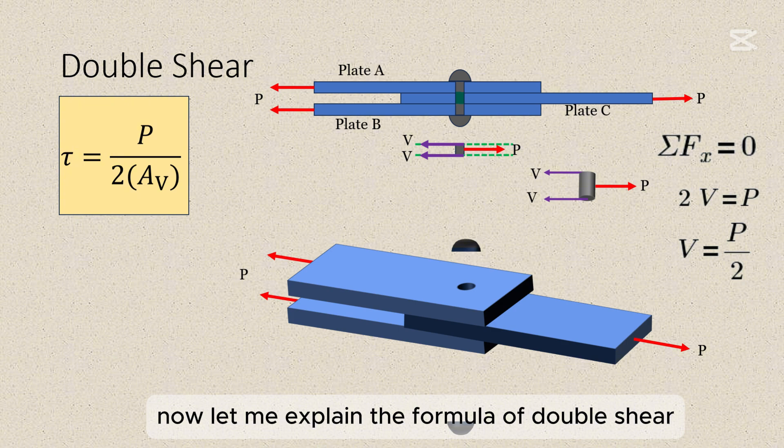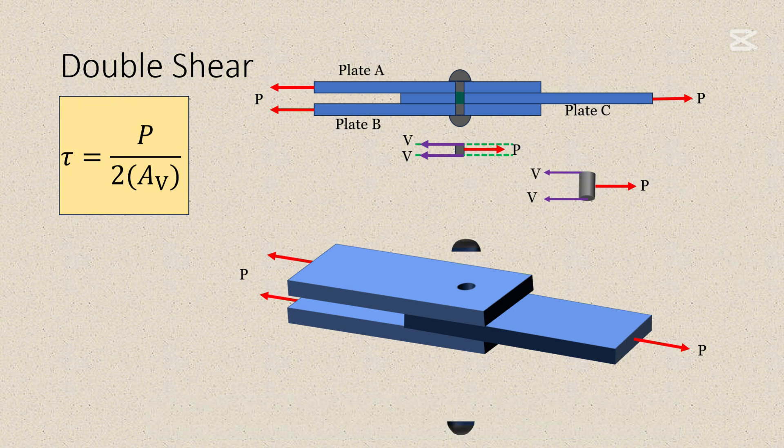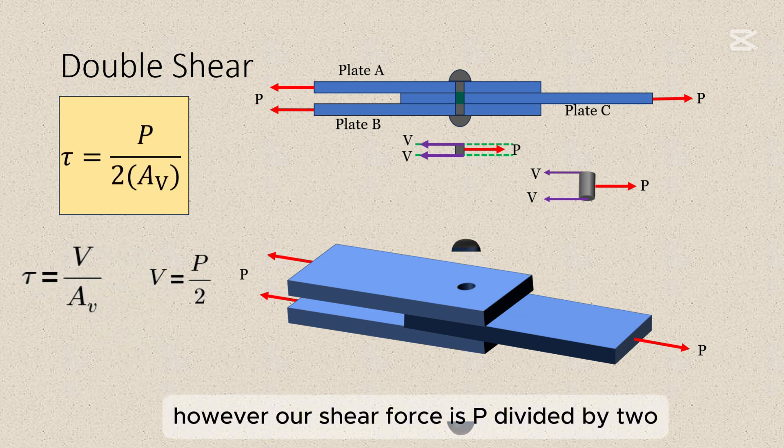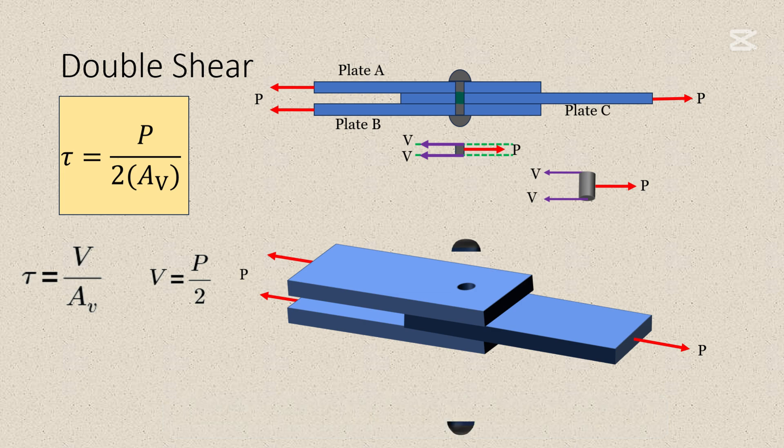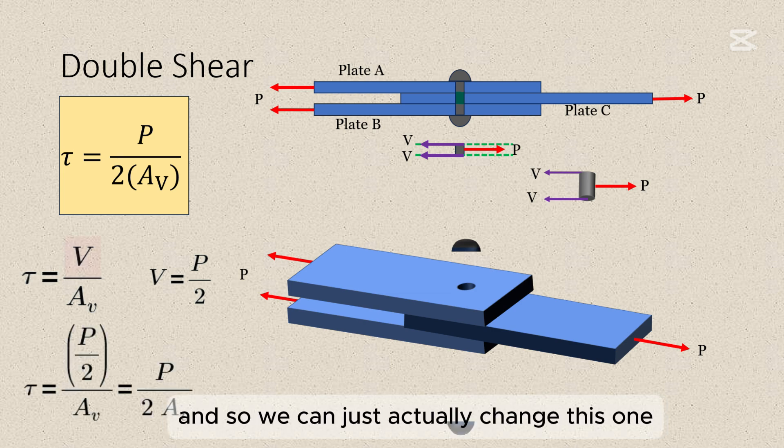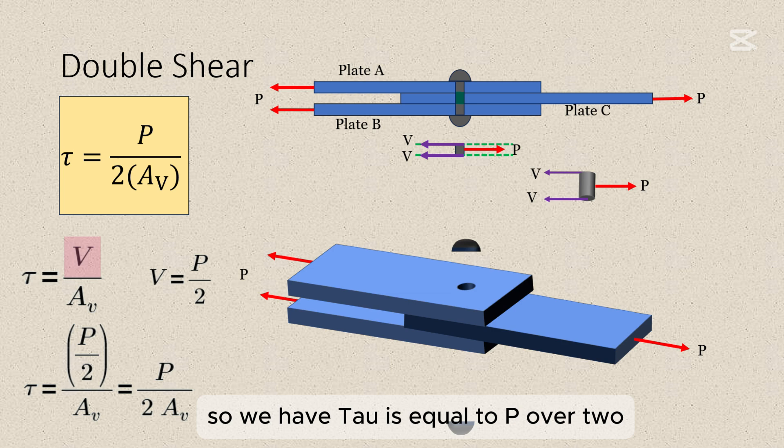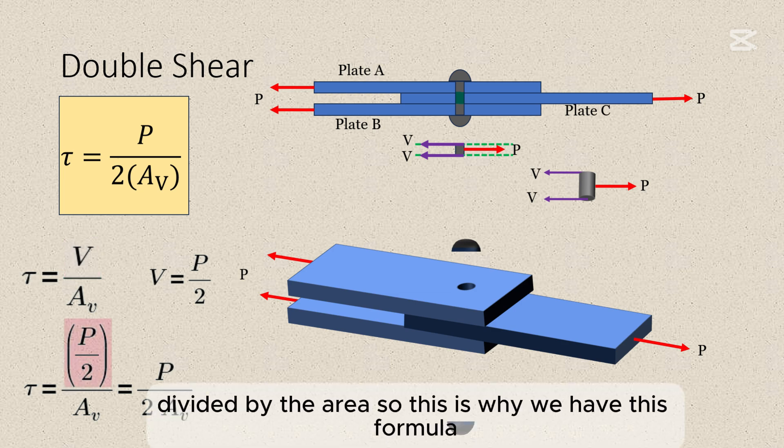Now let me explain the formula of double shear. Basically, this just comes from tau is equal to shear force divided by the area. However, our shear force is P divided by 2. And so we can just actually change this one. So we have tau is equal to P over 2 divided by the area. So this is why we have this formula.